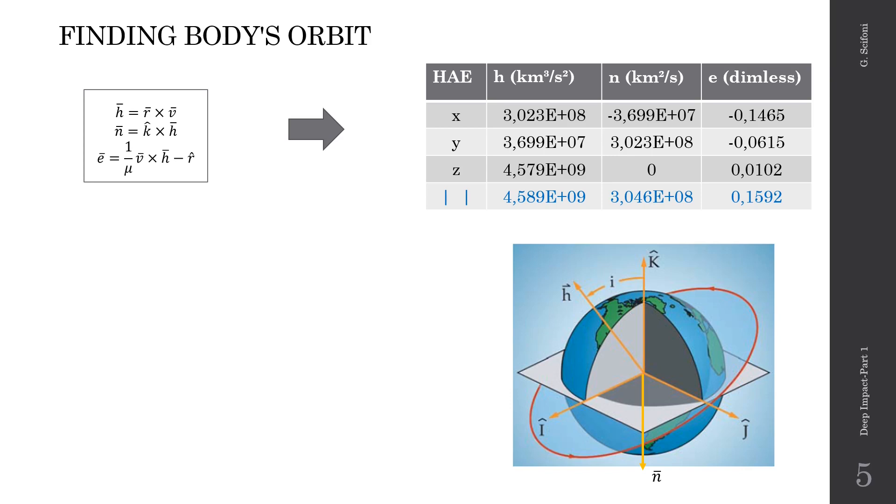To determine the orbital parameters, we need to introduce three new vectors. h, the angular momentum, defined as the cross-product between the vector r, the position, and the vector v, the velocity. Then the vector n, defining the line of nodes, which is k cross h, where k is a versor of the zeta axis. And e is so defined: It's 1 over mu, the gravity constant, the cross-product between velocity and angular momentum minus the r-versor. Its modulus is eccentricity, and it is directed from the origin to the periapsis. We calculate those vectors by means of r and v, which are known, and we get the values in the table right up.